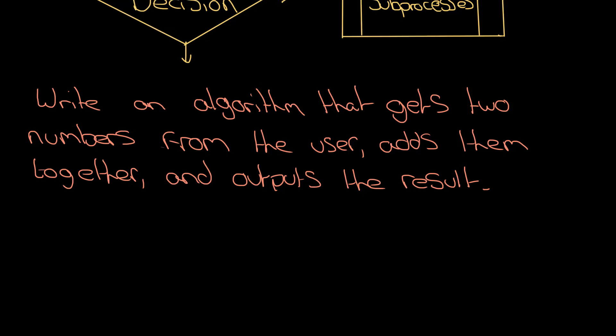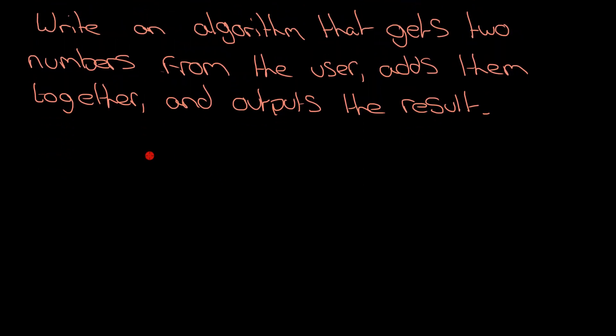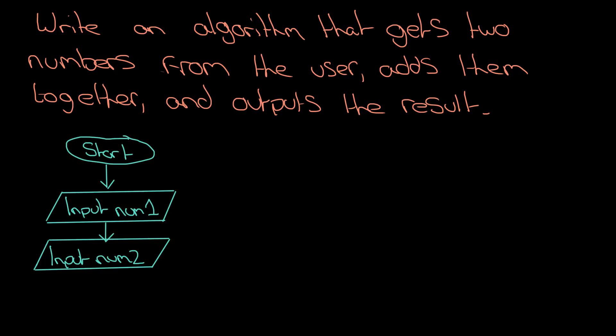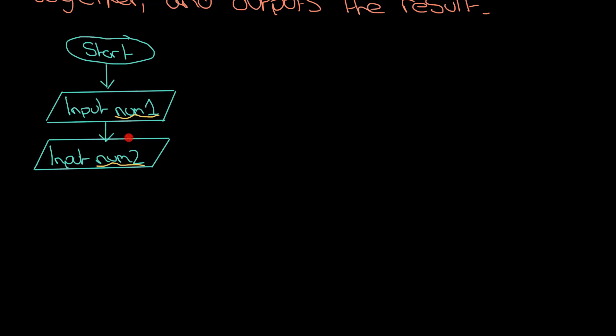You can start with your usual start and stop shape. I'm just going to do a freehand oval. Then we're going to go straight into getting the inputs from the user. You could arguably do this in one box and say input num1 and num2, but it makes it really nice and clear if you just separate these out. A key thing here is that you can't get away without using variables for flowcharts. That's a common mistake that I see. I'm saying here input num1, input num2. I'm being specific.